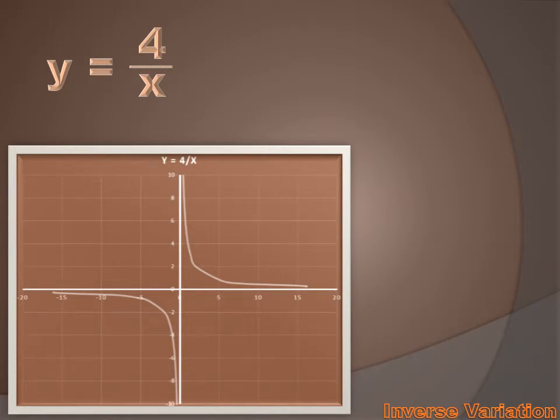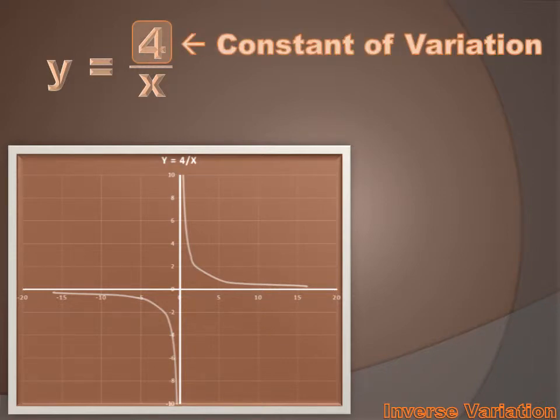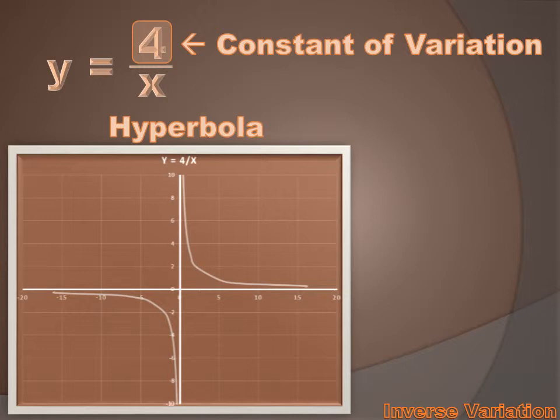Well, now let's tackle some inverse variation vocabulary. And we'll use this as an example: y equals 4 divided by x, which graphs just like that. Now for the vocabulary. That 4 up there is called the constant of variation, or sometimes the constant of proportionality. And the graph of an inverse variation characteristically looks like this. That graph is called a hyperbola. And a hyperbola has two branches on either side of the y axis.